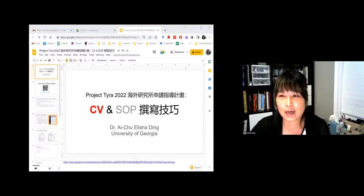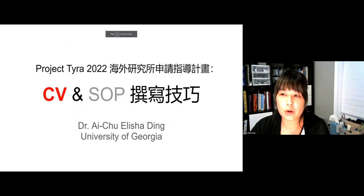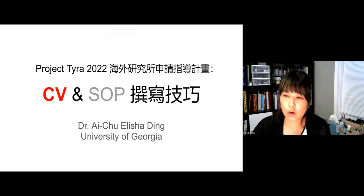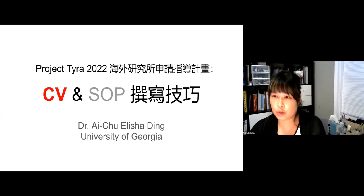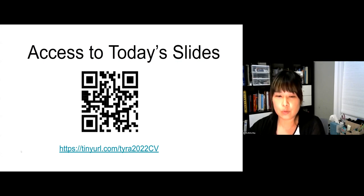因为前面两位讲者已经基本上分享了很多很精彩关于CV的部分，那我讲的部分可能稍稍有点重复，但因为我大概算是目前四位讲者里面唯一一个在美国大学里面担任助理教授，所以我其中一个部分的分享我会跟大家分享，以一个教授去review博士班申请的时候，我会是用什么样子的角度、什么样子的思维。那我目前是在University of Georgia担任助理教授，我先前是在Ball State University担任，这两间学校在我的系里面都有PhD的program。